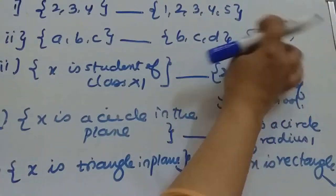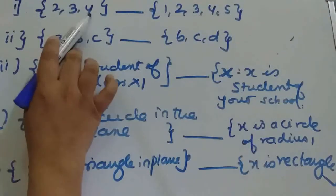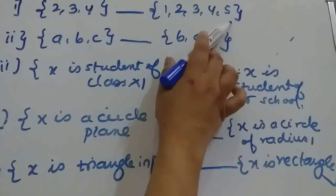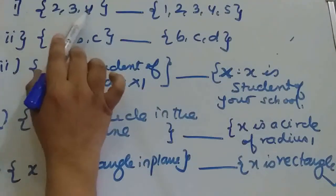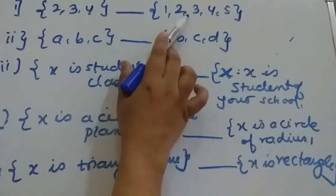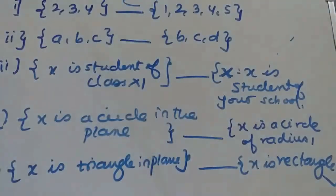So first example: consider {2, 3, 4} and {1, 2, 3, 4, 5}. Here we can observe each of the elements is there in this set also. 2, 3, 4 is in this set also. So it is a subset.